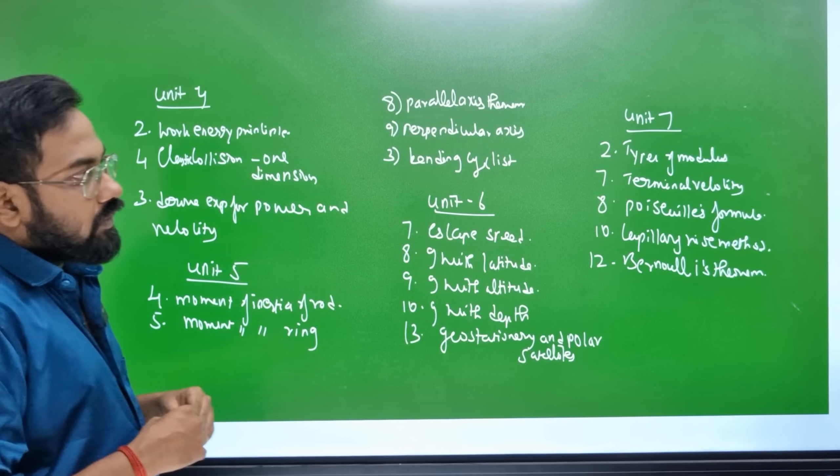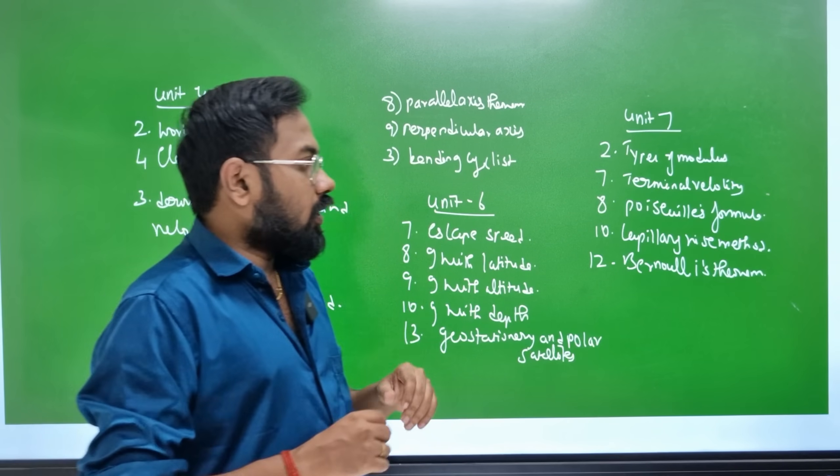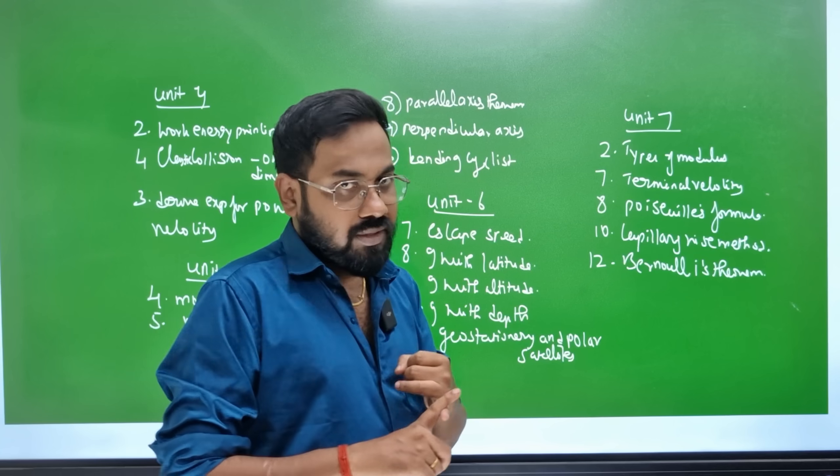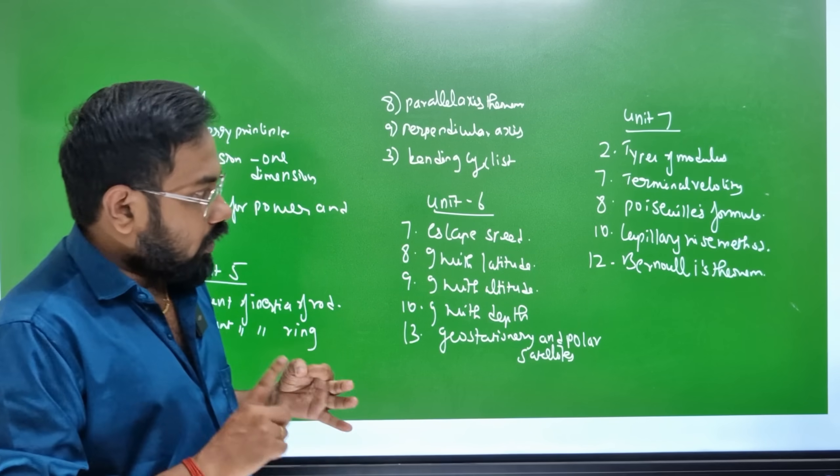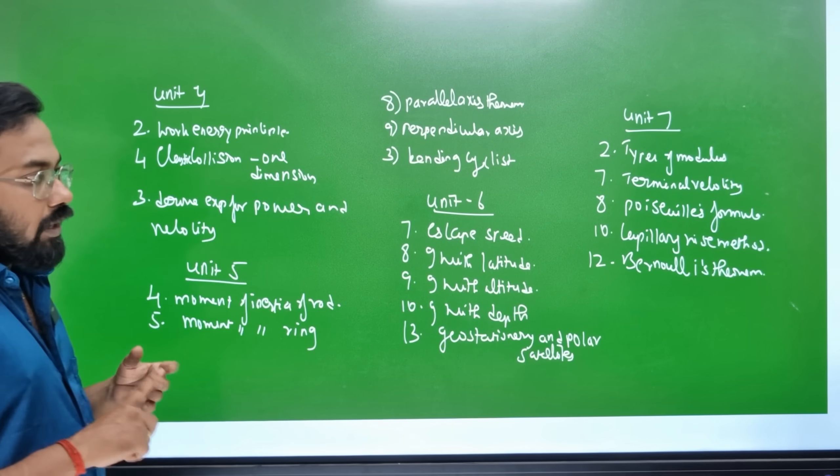Unit 7 includes Types of Modulus, Terminal Velocity, and Poiseuille's formula.